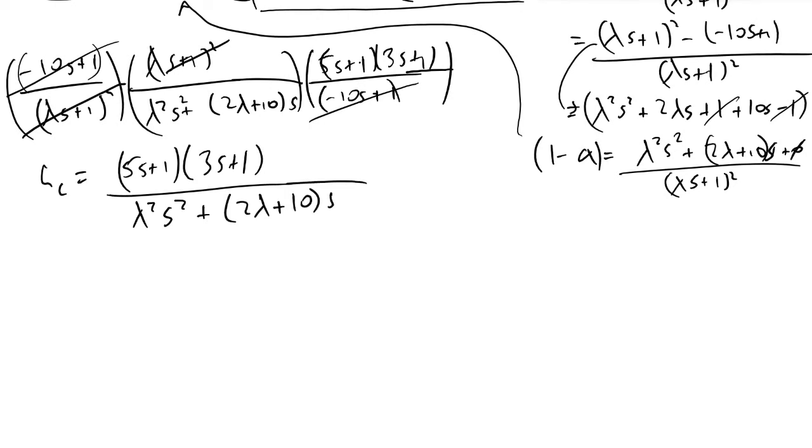The next thing we need to do is get this into the form of a PID controller. To do that, it is just an algebra rearrangement. What we do is multiply the top and the bottom by 1 over (2*lambda plus 10).